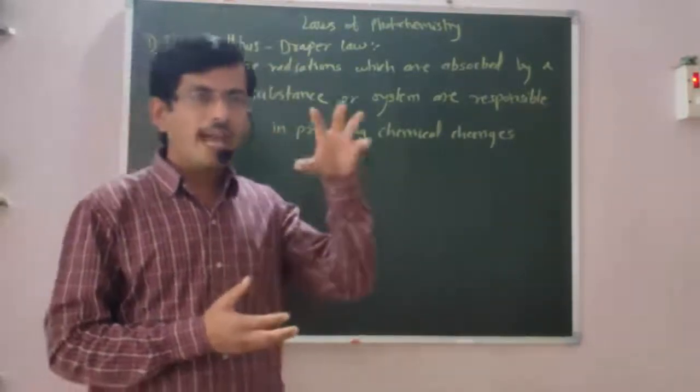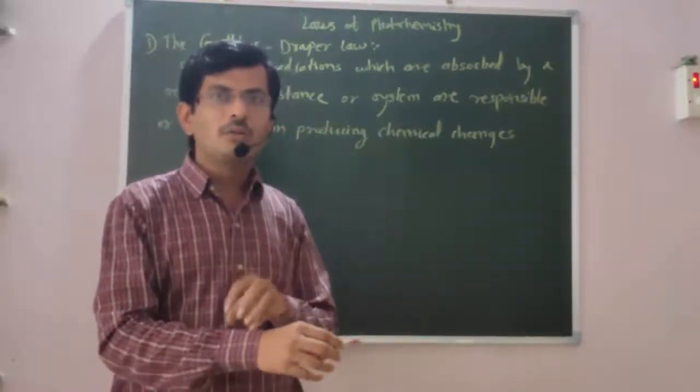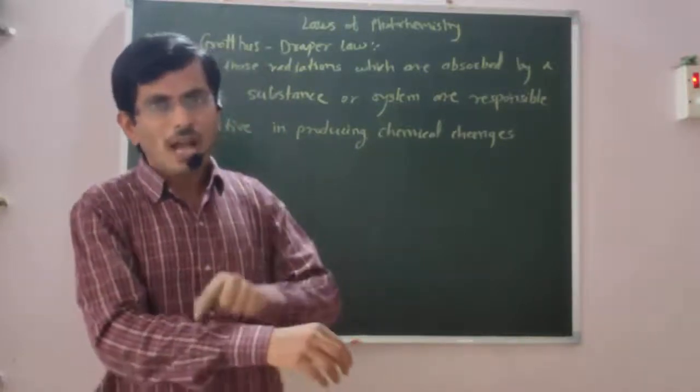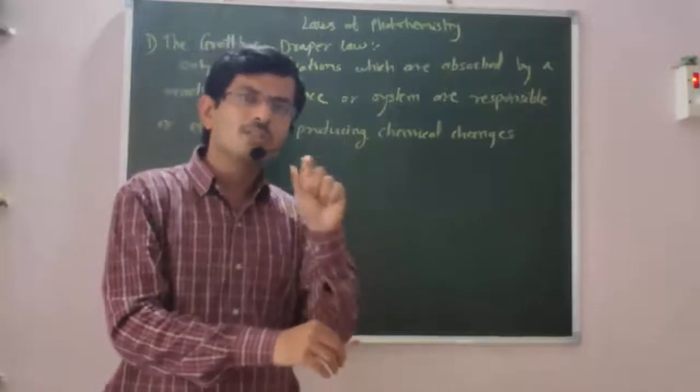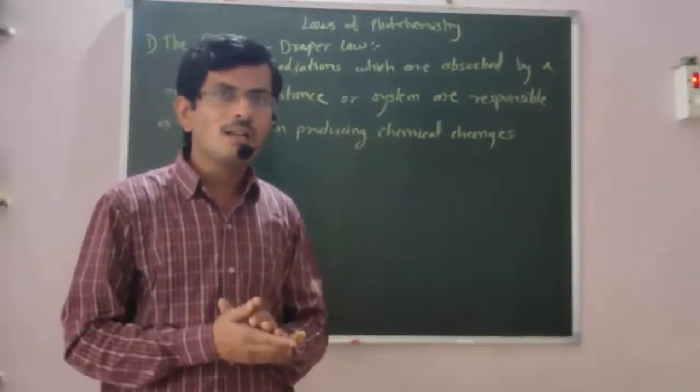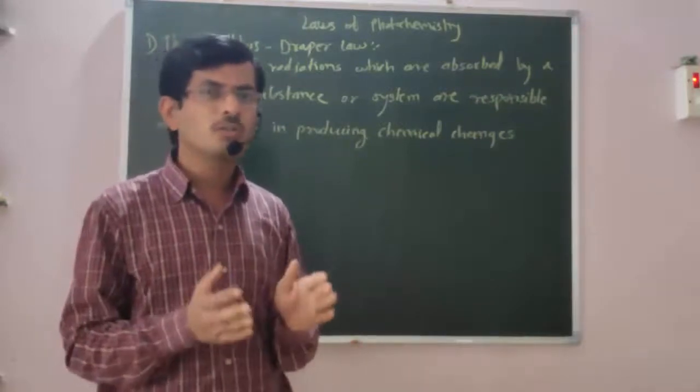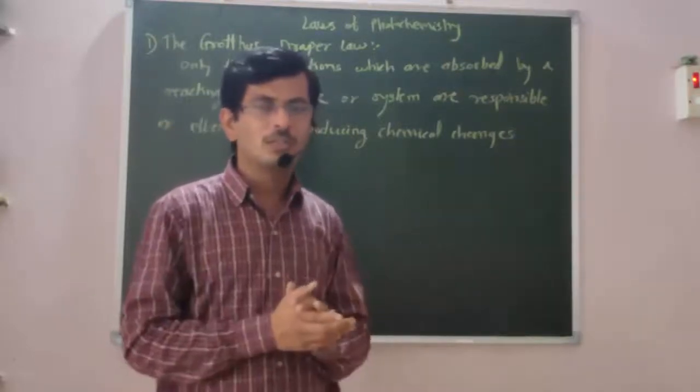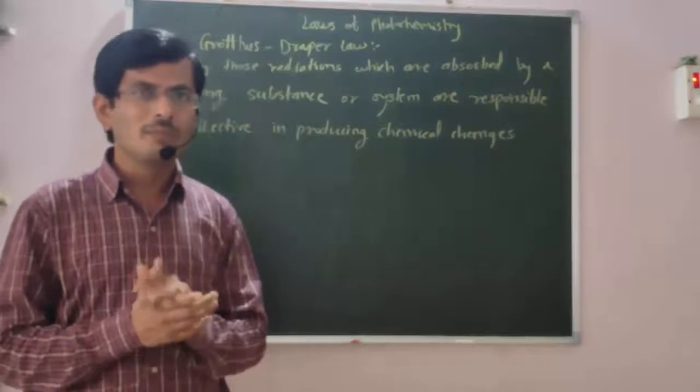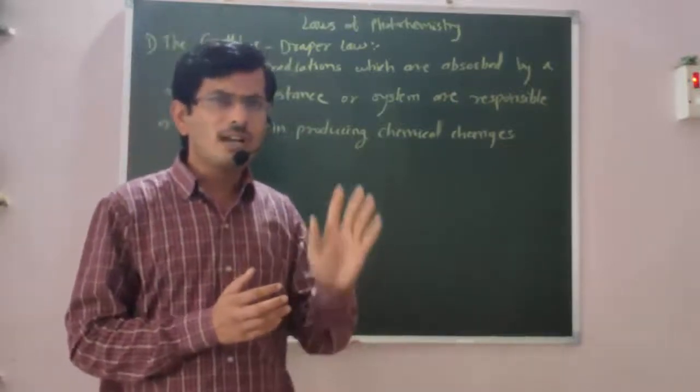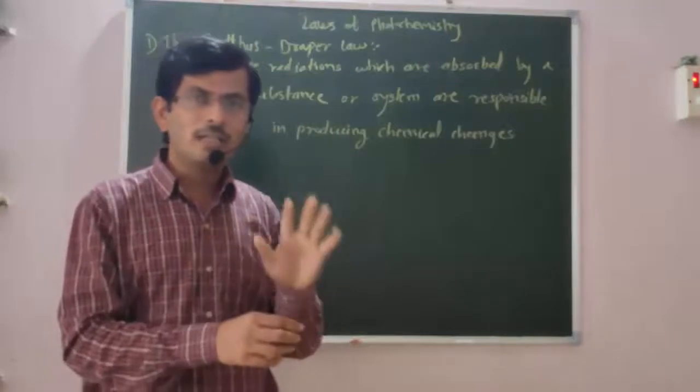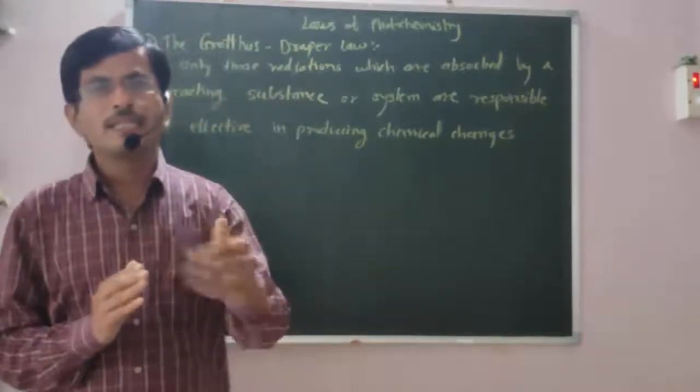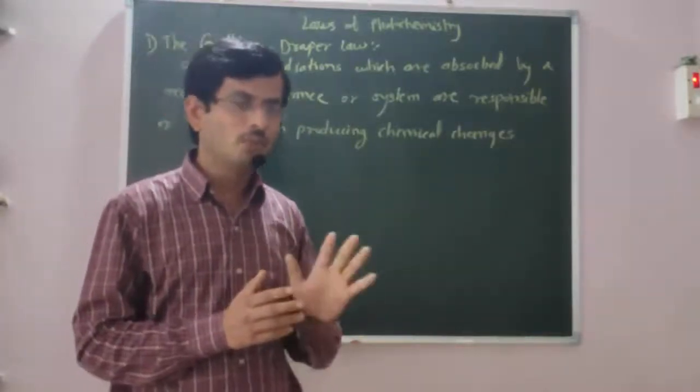The color fades because of photochemical reaction. Direct sunlight causes decomposition of the dark color. The dye substance decomposes and the cloth loses color. This is why we dry colored clothes in shade instead of direct sunlight, to avoid photochemical decomposition and decolorization.